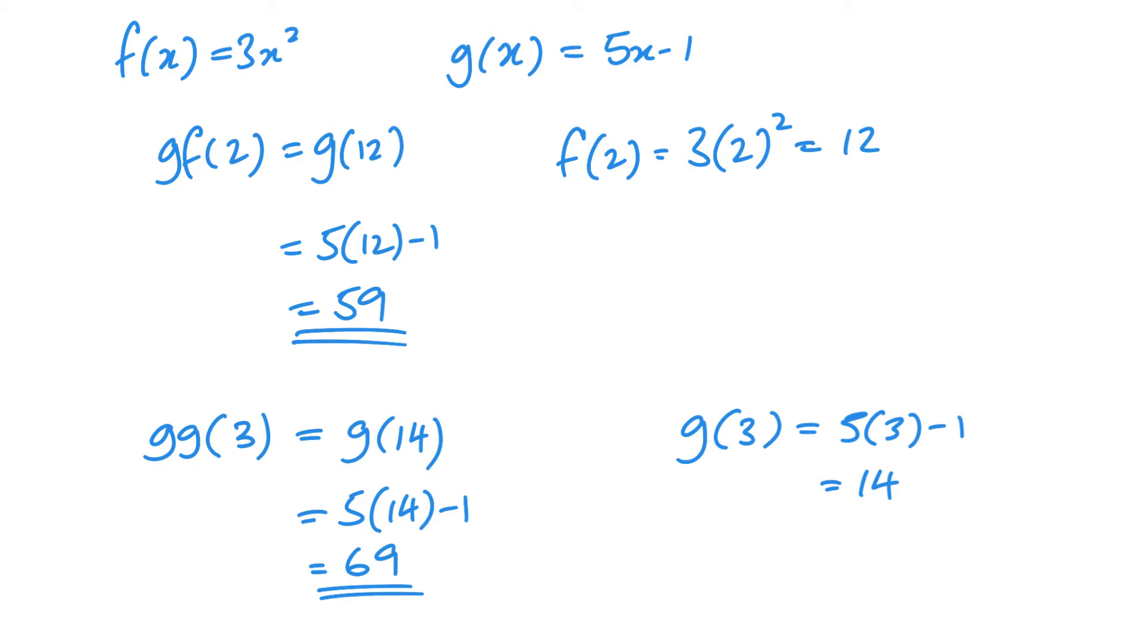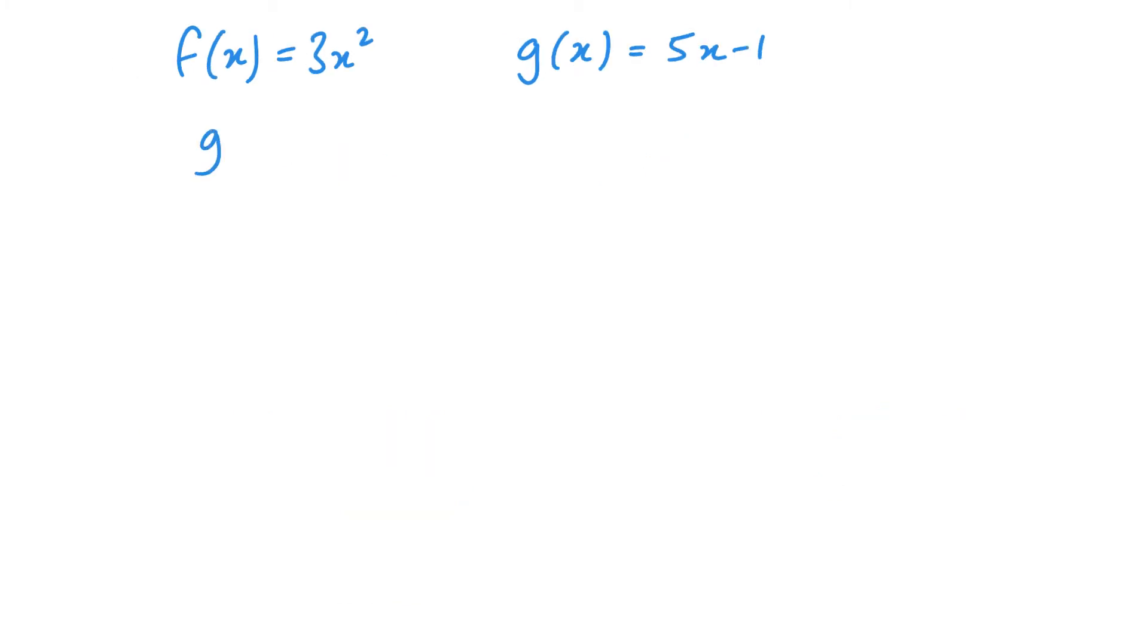Now let's look at how we combine them together algebraically. So if I have to do say fg of x, that means I'm putting that g of x inside the f of x. So we're looking at f of 5x minus 1. And then when I look at my function here, I'm going to replace the x's with 5x minus 1. So 3 lots of 5x minus 1 squared. And that's my function. Now I should then go ahead and expand it and simplify. So let's do that now.